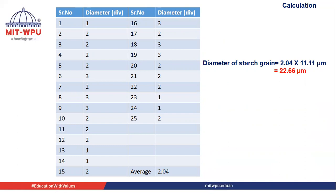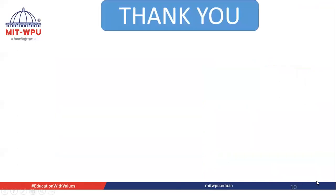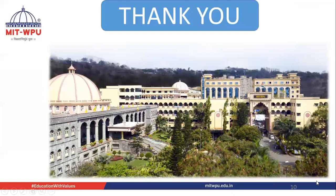This method is also used to determine the length and width of fibers, and for measurement of calcium oxalate crystals. So by using the stage micrometer and eyepiece micrometer, we can measure diameter, length, width, and also calcium oxalate crystals.